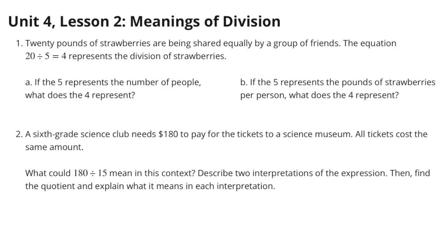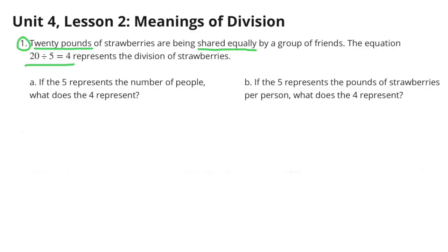Unit 4 Lesson 2: Meanings of Division. Number 1. Twenty pounds of strawberries are being shared equally by a group of friends. The equation 20 divided by 5 equals 4 represents the division of strawberries.